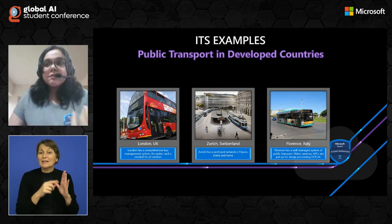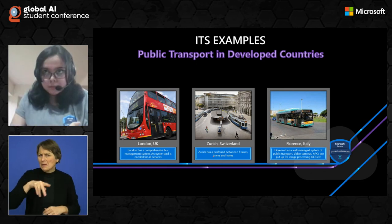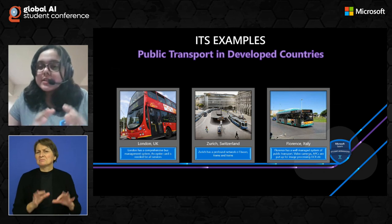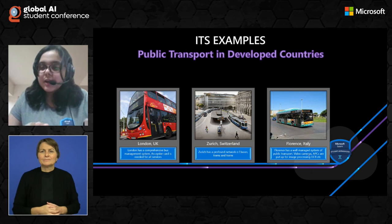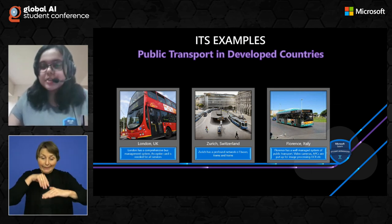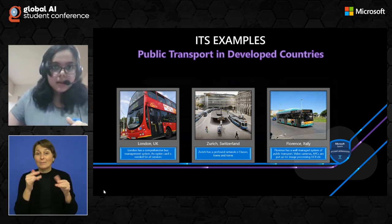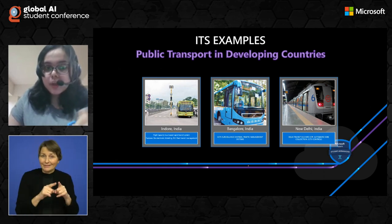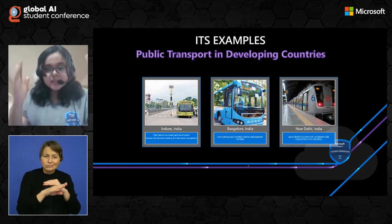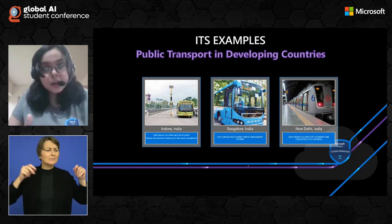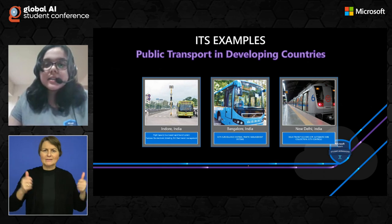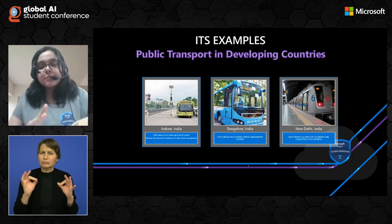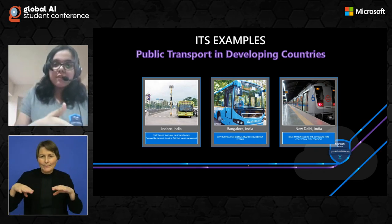Zürich has very good systems and very good RTPI systems both on the public vehicles and at the stations. Florence, Italy is a perfect exemplification of multimodal transportation with a well-managed system of public transport. There are video cameras and automatic passenger counters, and image processing and optical character recognition are used to count the number of vehicles to ensure there is no overcrowding. In developing countries like India, Indore is a very good example where high-capacity bus-based rapid transit systems are used with electronic ticketing, automatic vehicle location, and fleet management. Bangalore, India also has CCTV surveillance systems on buses and integrated traffic management systems so that images from CCTVs can be analyzed to deem various routes as safe or dangerous.